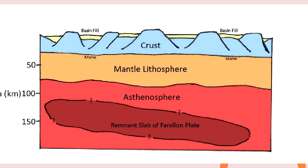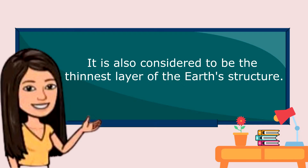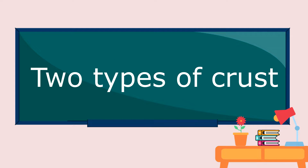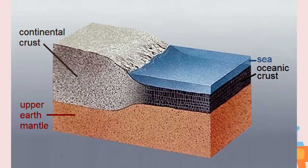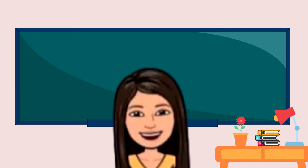The crust is the outermost solid shell of a rocky planet. It is also considered to be the thinnest layer of the Earth's structure. The crust is divided into two types: the oceanic crust and continental crust.